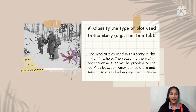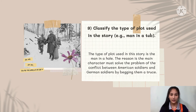The ninth question: classify the type of plot used in the story. Our answer is the type of plot used in this story is the 'man in a hole' plot. The reason is the main character must solve the problem of the conflict between American soldiers and German soldiers by making them treat each other as friends.